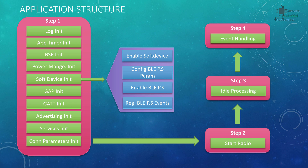Then we have SoftDevice initialization, which involves four basic steps: enable the SoftDevice, configure the BLE protocol stack parameters, enable the protocol stack, and register the protocol stack to start receiving events. This is similar to interrupt programming — we register a callback event function and in that function we receive events such as connection or disconnection and perform steps accordingly.